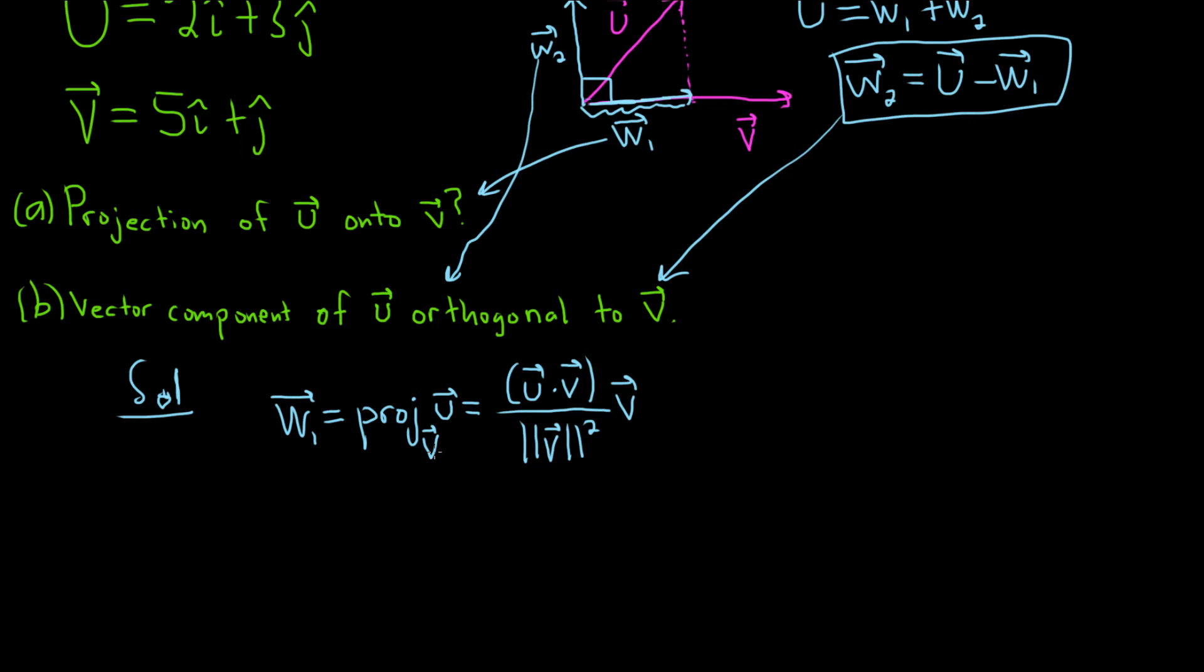So let's do this carefully. I'm going to write u and v in component form just to make it easier. So u is 2i hat plus 3j hat. In component form, that'll be 2 comma 3. And then v is 5i hat plus j hat. So in component form, that'll be 5 comma 1.